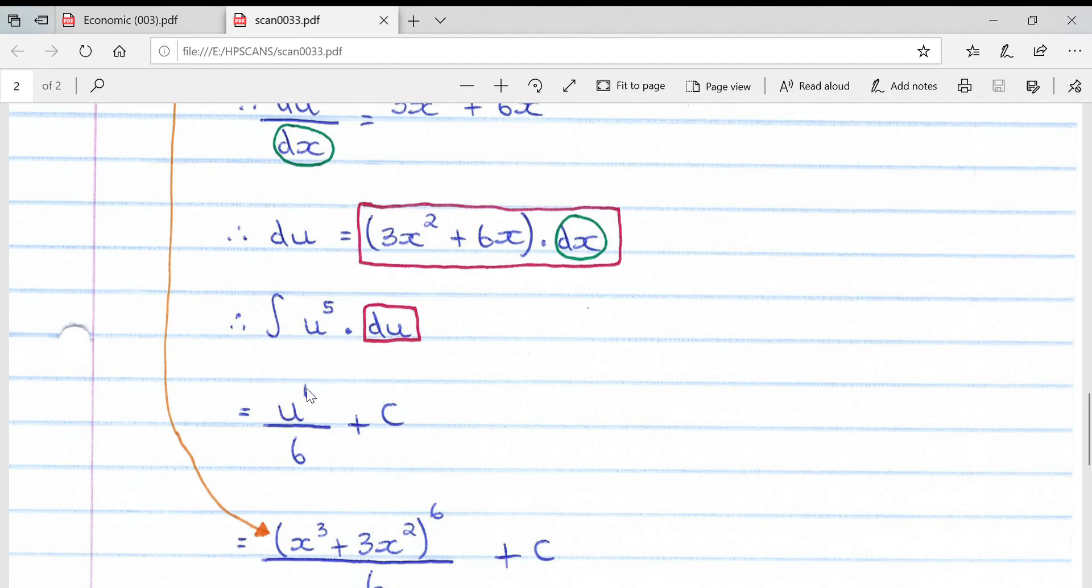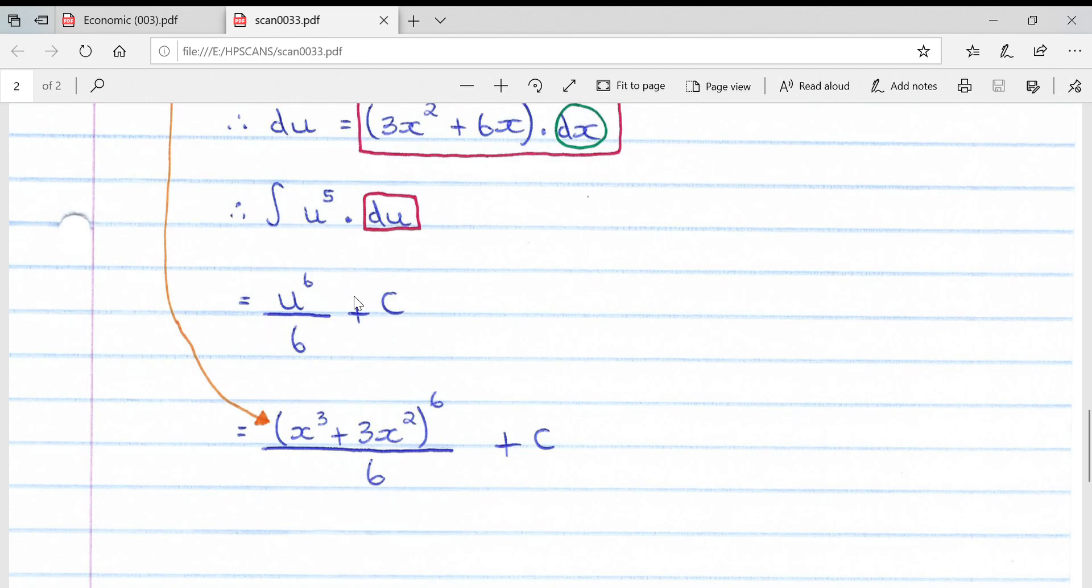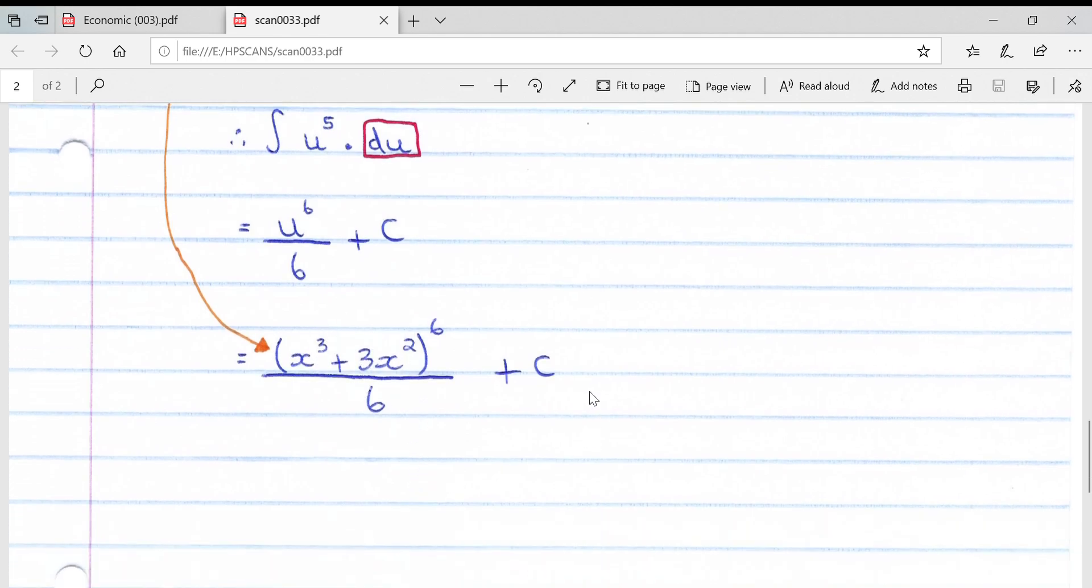All we have to do is add 1 to the power: u to the 5 plus 1, which is u to the 6, over that new exponent which is 6, plus c. The main thing which a lot of students forget is to substitute back what you made equal to u. You substitute that back in and get your answer. That concludes the video on an introduction to integration.